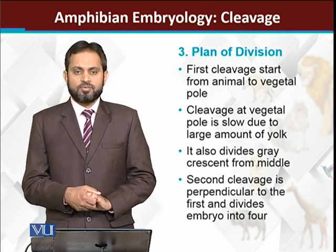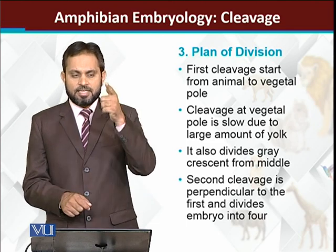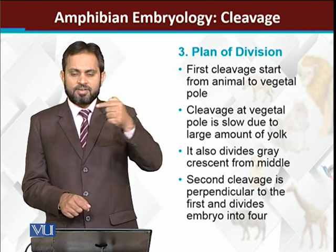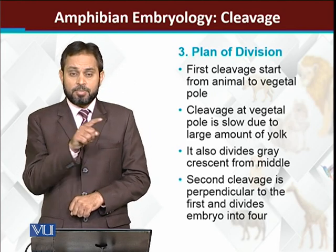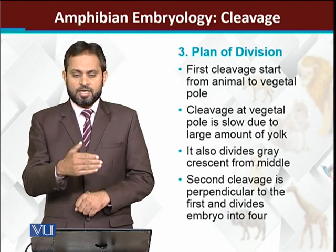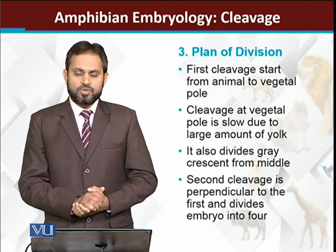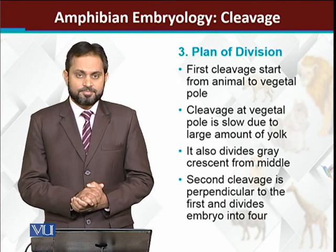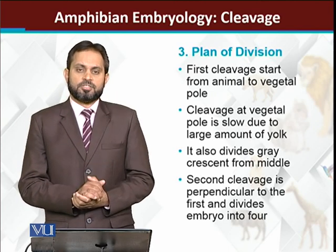The second cleavage is at a right angle to the first cleavage. If the first is in one direction, the second is also vertical but perpendicular to the first — like a plus sign. Both the first and second cleavages are vertical, starting from the animal pole and moving toward the vegetal pole.